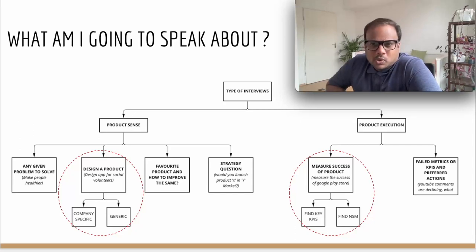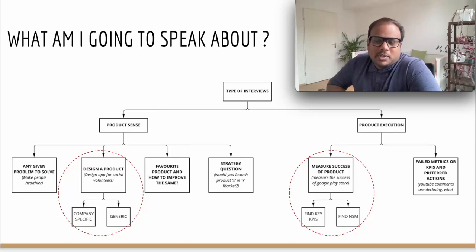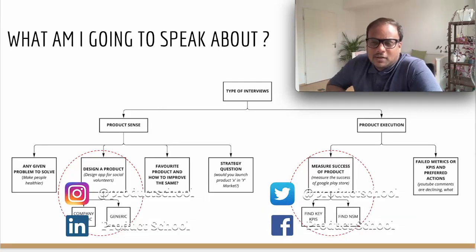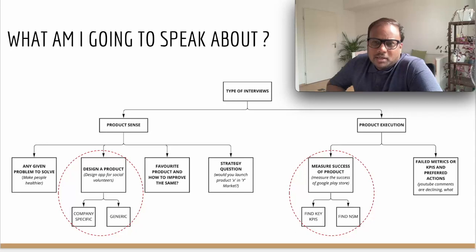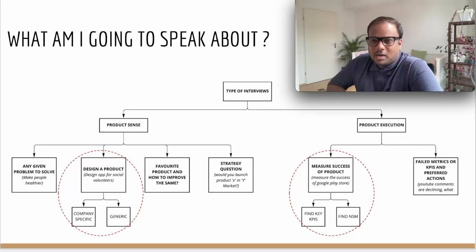The first type is where you are given any random problem to solve — for example, make people healthier. There is no company, no organization, no additional details given to you. It's an ambiguous and vast problem area. The second type is where you are playing the role of a product manager for a particular organization and are clearly given a task to design or develop a product for a particular feature or problem statement — for example, design an app for social volunteers. The third type could be: tell me about your favorite product and why, and how would you further improve it? The fourth type is a strategy question where you are asked your opinion about whether you should launch product X in market Y, and why and how.